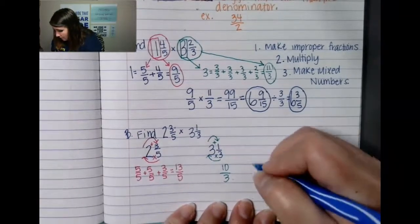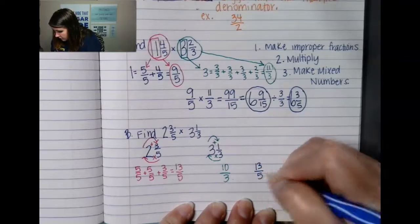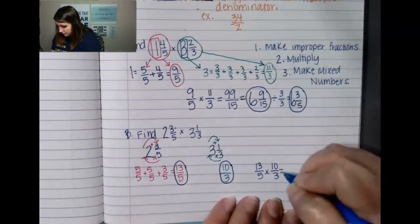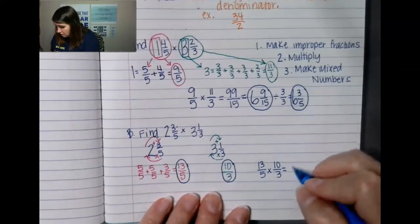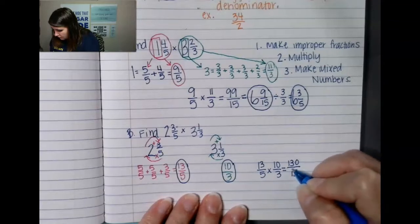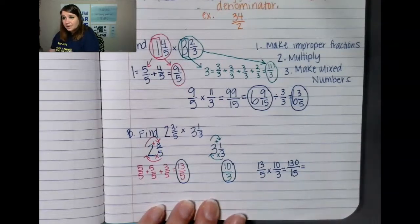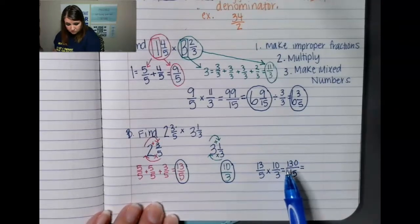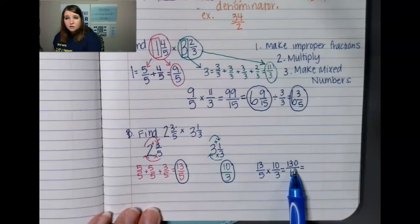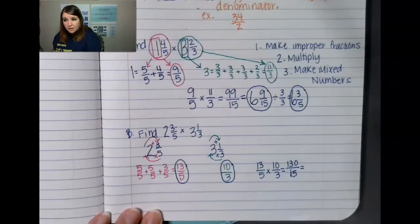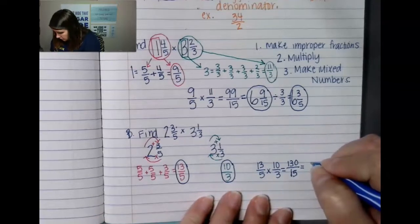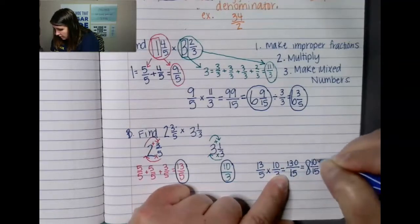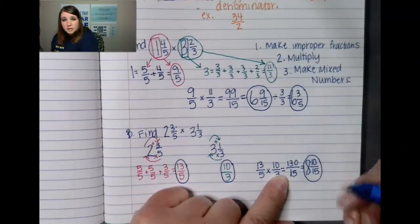I'm going to multiply thirteen-fifths times ten-thirds — improper fraction times improper fraction. Thirteen times ten is one hundred thirty, and five times three is fifteen, giving me one hundred thirty over fifteen. I'm not done because I need to convert to a mixed number. Eight times fifteen is one hundred twenty, so I can pull out eight wholes, which leaves ten over fifteen.